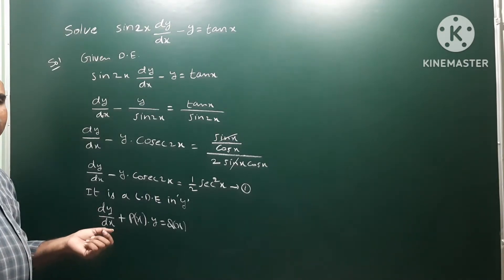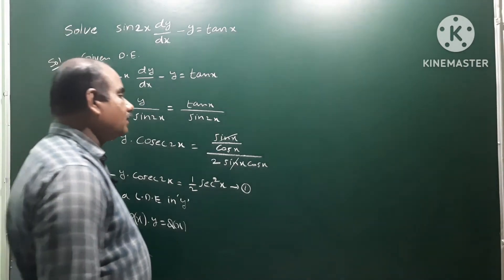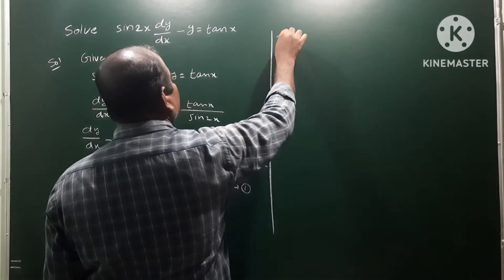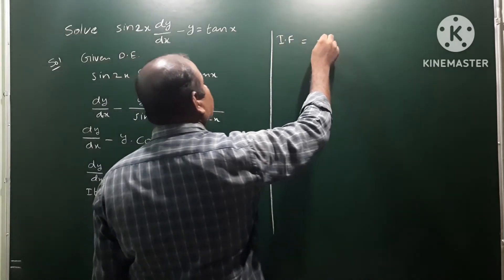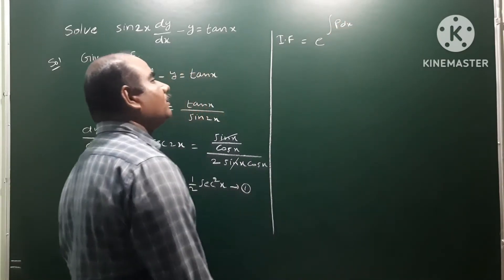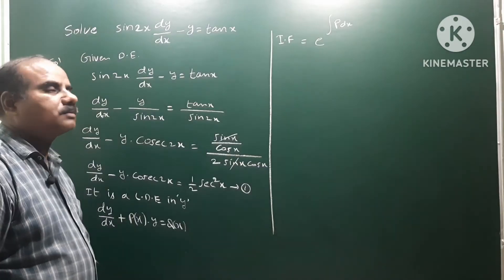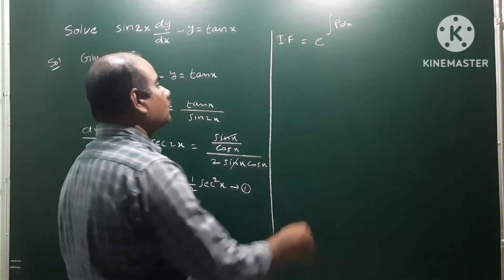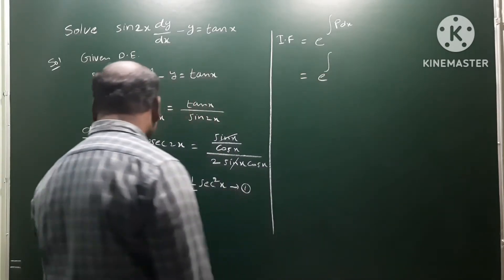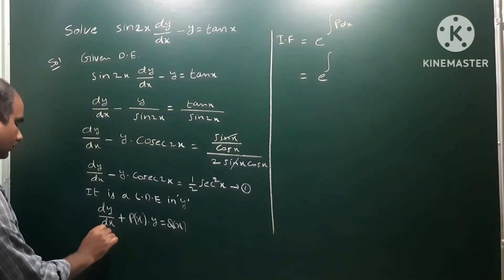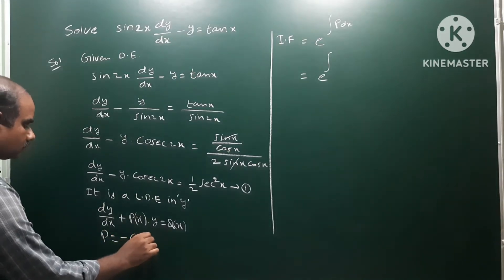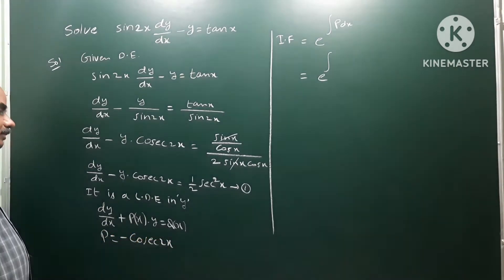Next, we find the integrating factor (IF). The integrating factor is e^(∫P dx), where P(x) is the coefficient of y. Here, comparing with the standard form, P is equal to −cosecant x.